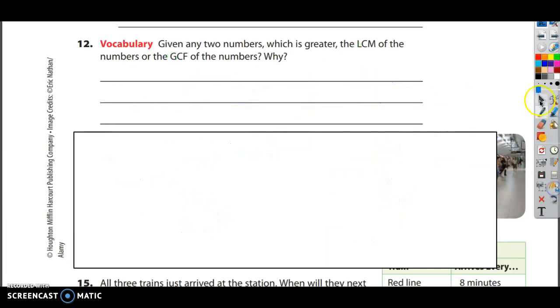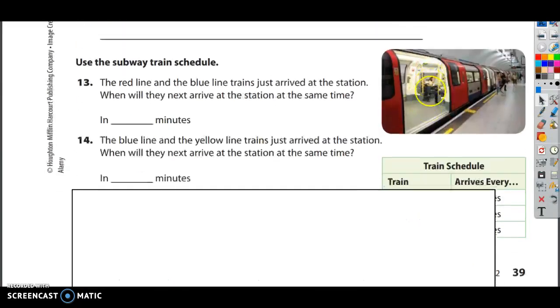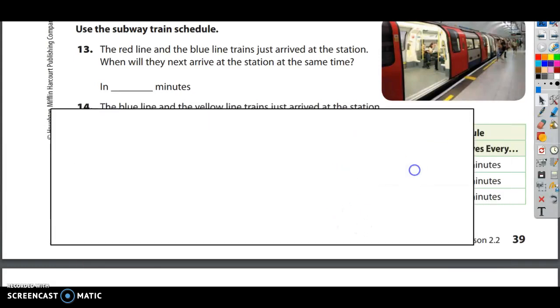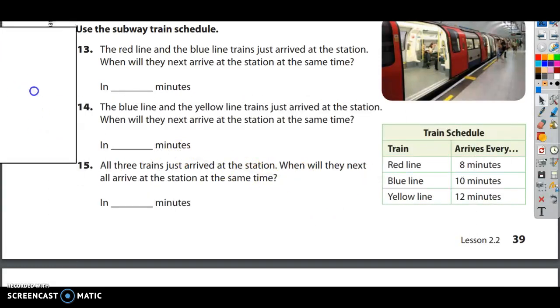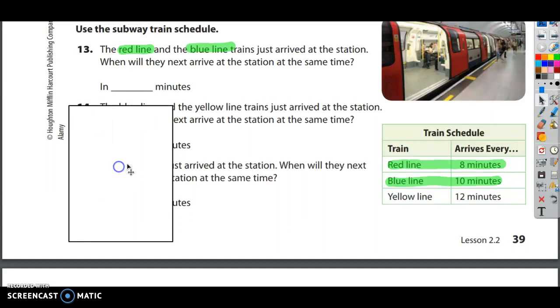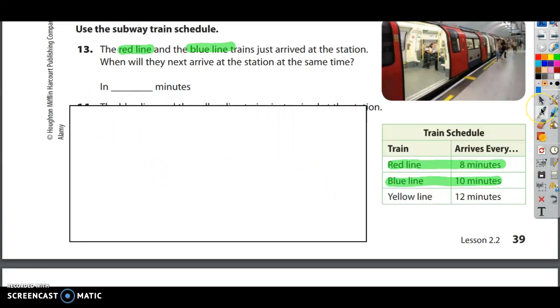All right, let's check out the bottom of the page. I may use this. I don't know if I'll use this or not. I'm going to get it out of the way for now. I may use it. We'll see. I probably will. It says, use the subway train schedule. Number 13 reads, the red line and the blue line, the red line and the blue line, trains just arrived at the station. When will they next arrive at the station at the same time? In blank minutes. So go down to your train schedule and you've got the red line comes back every 8 minutes and the blue line comes back every 10 minutes. I hope you recognize this as a LCM of 8 and 10.